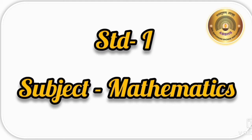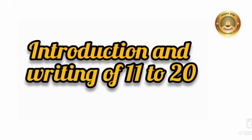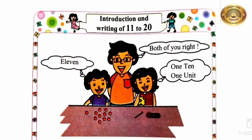Children, we have learned the numbers from 1 to 9. The numbers from 1 to 9 are one-digit numbers. We have also learned how to write number 10. Number 10 is a two-digit number. Today we are going to learn the two-digit numbers that come after 10. The name of our topic is Introduction and Writing of 11 to 20. Please open your textbook to page number 40.